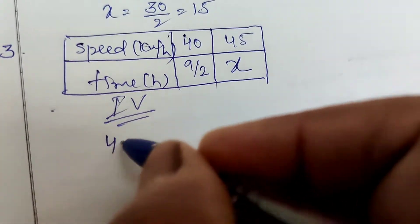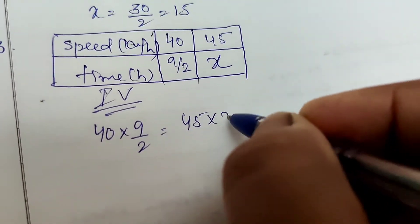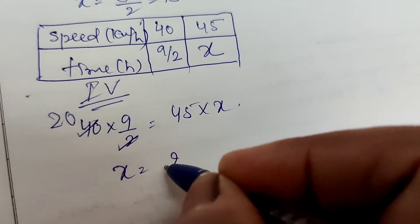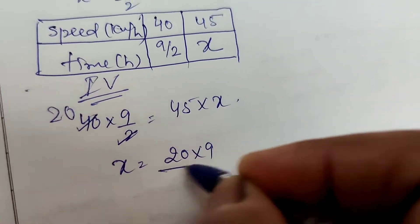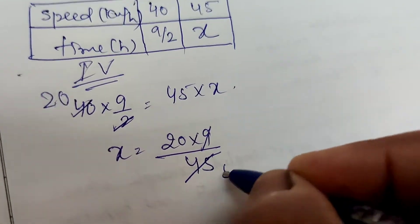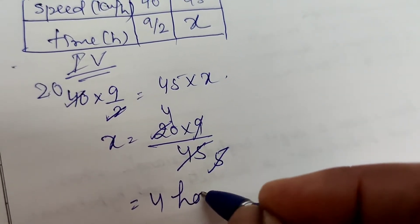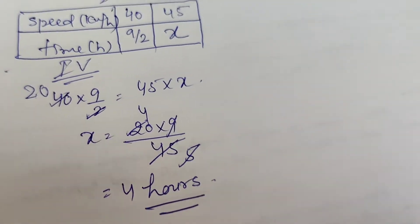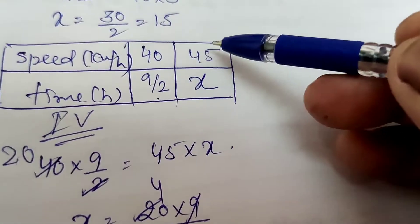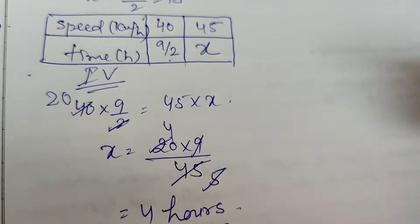Using inverse variation: 40 × (9/2) = 45 × x. So x = (20 × 9) ÷ 45. Cancelling by 9 and 5 gives x = 4 hours. When speed is 40 km/h the time is 4.5 hours, and as speed increases to 45 km/h, the time reduces to 4 hours. This confirms it is a case of inverse variation.